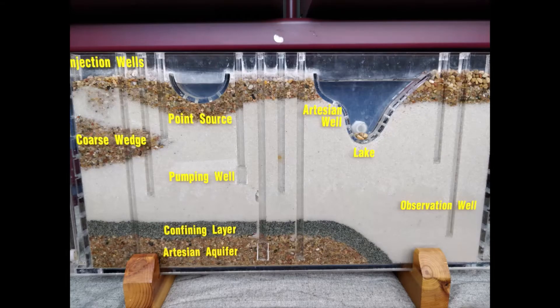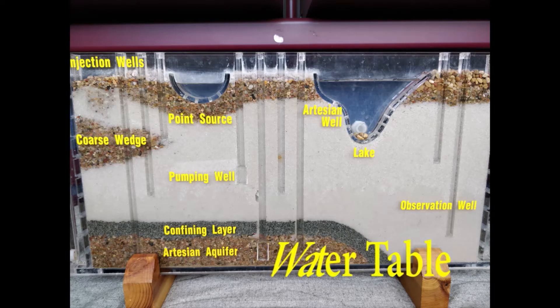Now that it has rained in our model, where is the groundwater? If you remember from our porosity experiment, the water is in the pore spaces between the sand and gravel particles. What about the water table? Where do you think that might be?